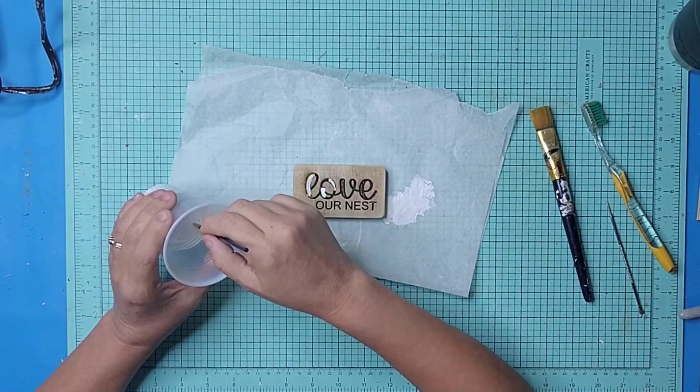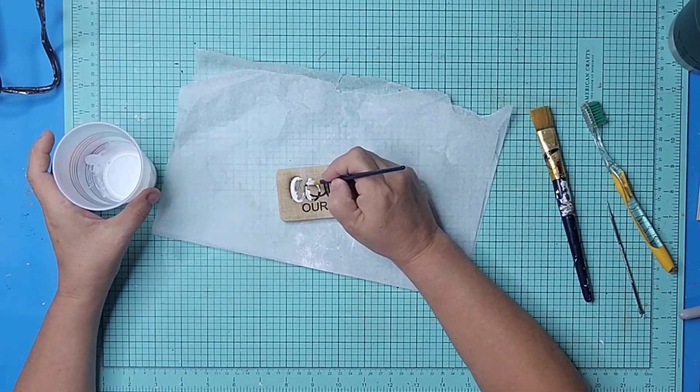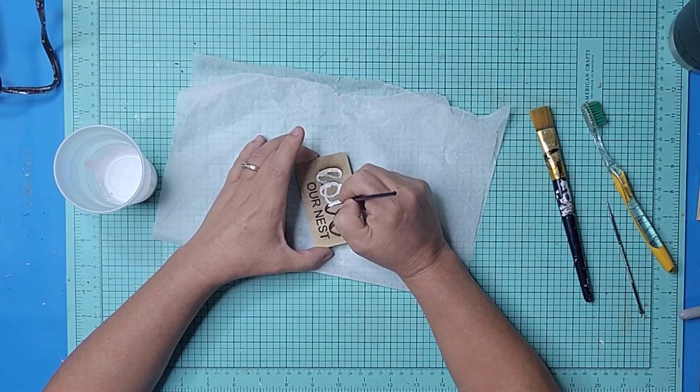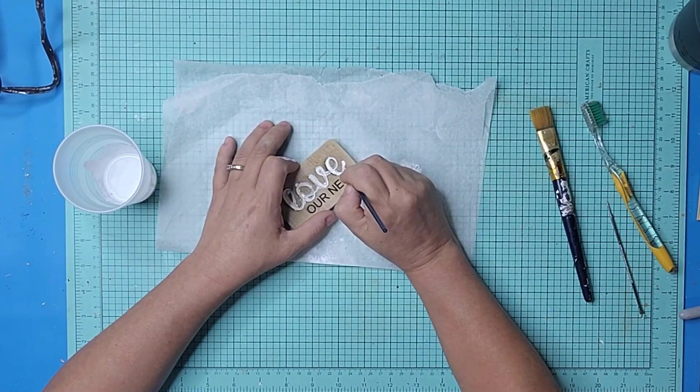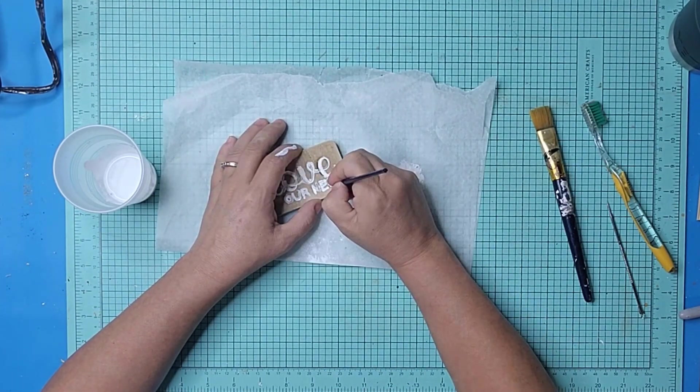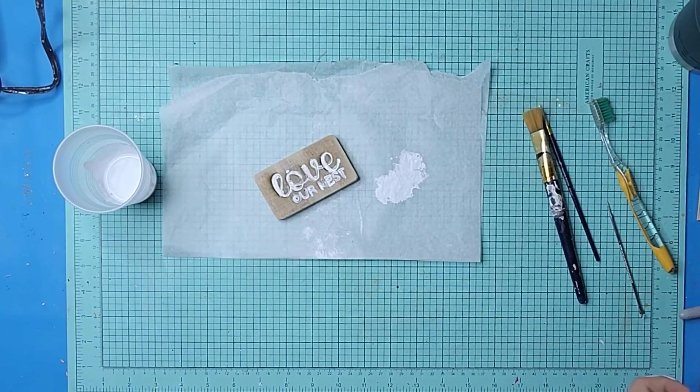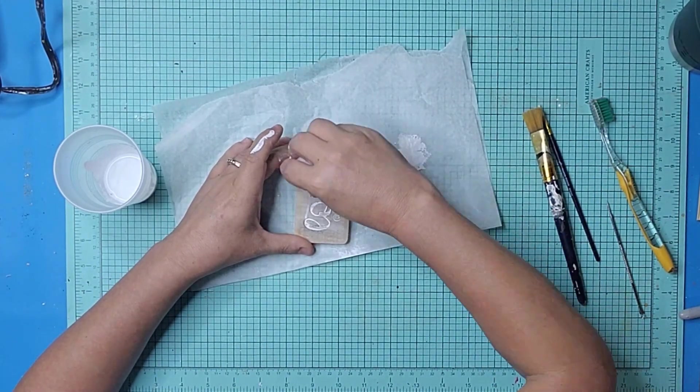I mixed a little bit of water with some white chalk paint and applied it to the little tag. And then wiped everything down with a baby wipe.